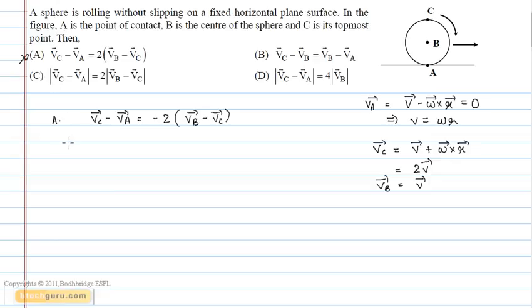Now solving option B: Vc vector minus Vb vector equals Vb vector minus Va vector. Therefore, option B is correct.